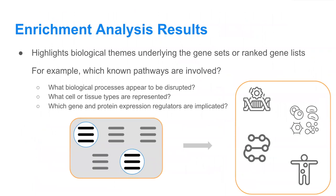Going back to the original 'why' of enrichment analysis: once you have enrichment results — those term rankings — you can start to understand the biological themes underlying the gene set or ranked gene list from your data. Which known pathways are involved? What biological processes appear to be disrupted? What cell or tissue types are represented? What gene and protein expression regulators are implicated? This gives a strong starting point for diving deeper into whatever condition, disease, drug, or gene you're studying in the original omics study.